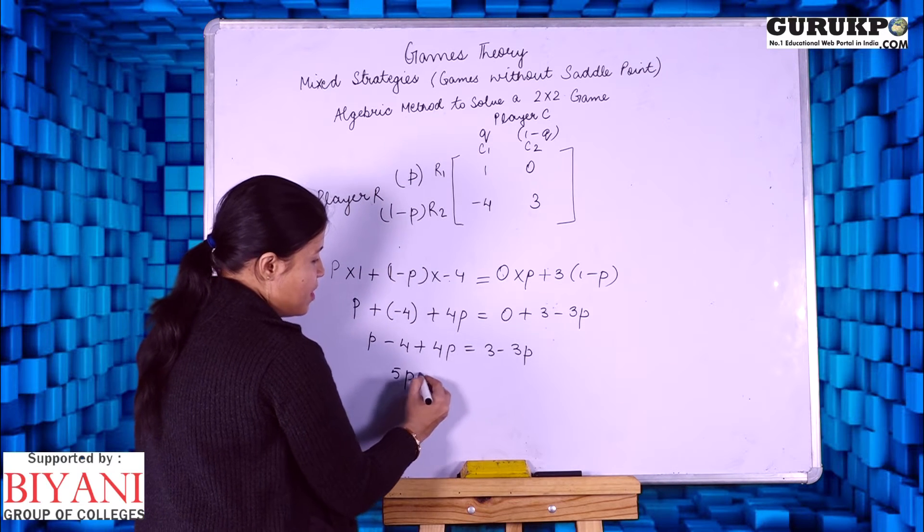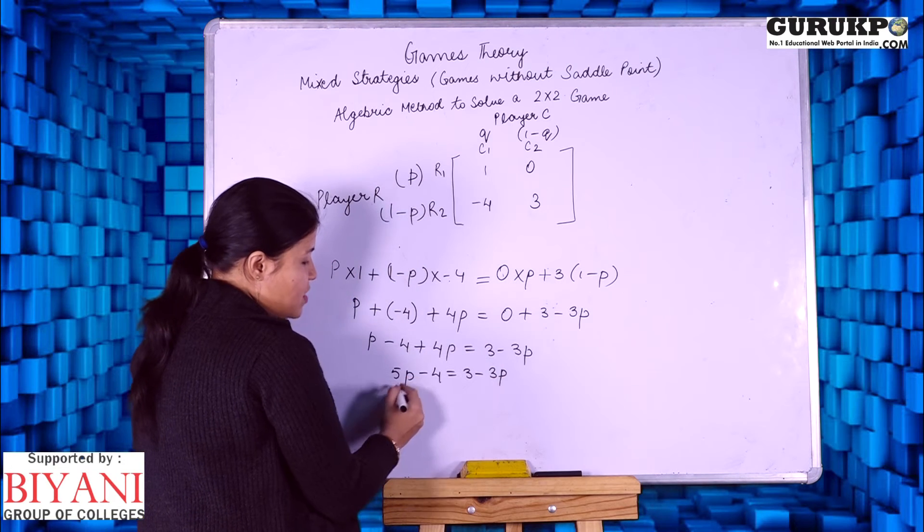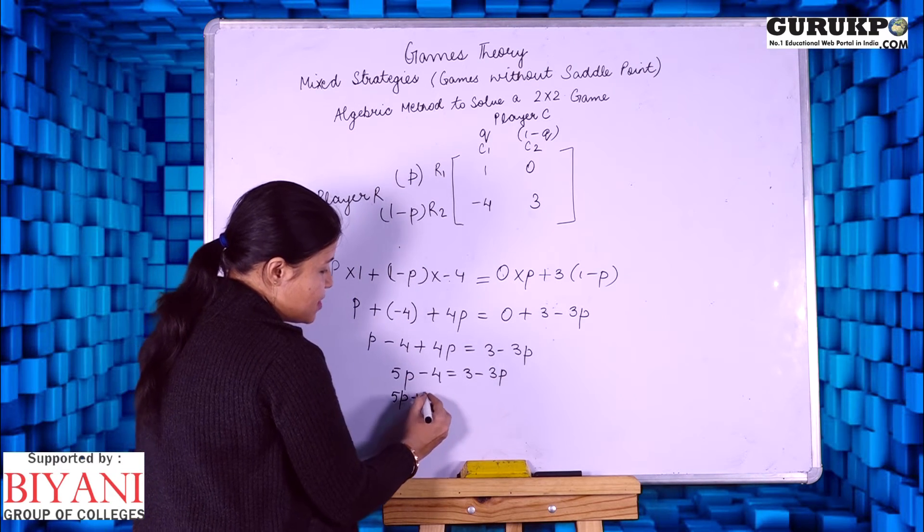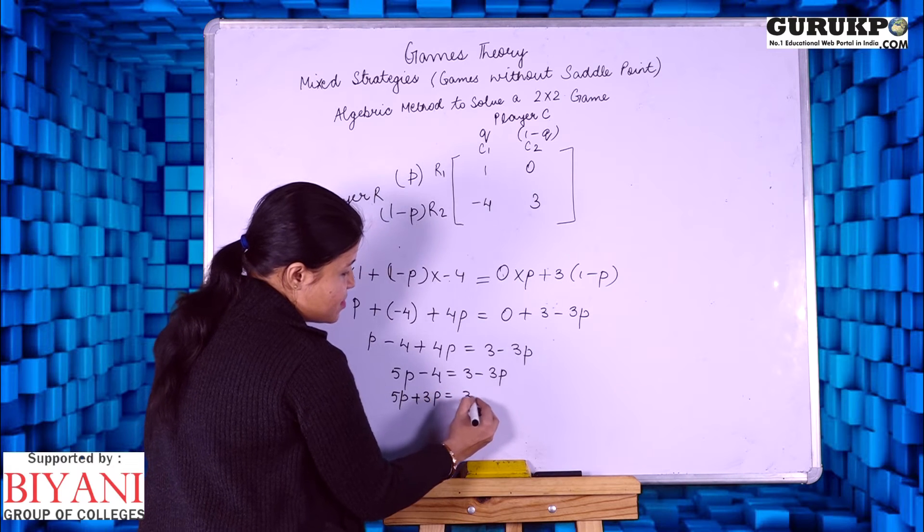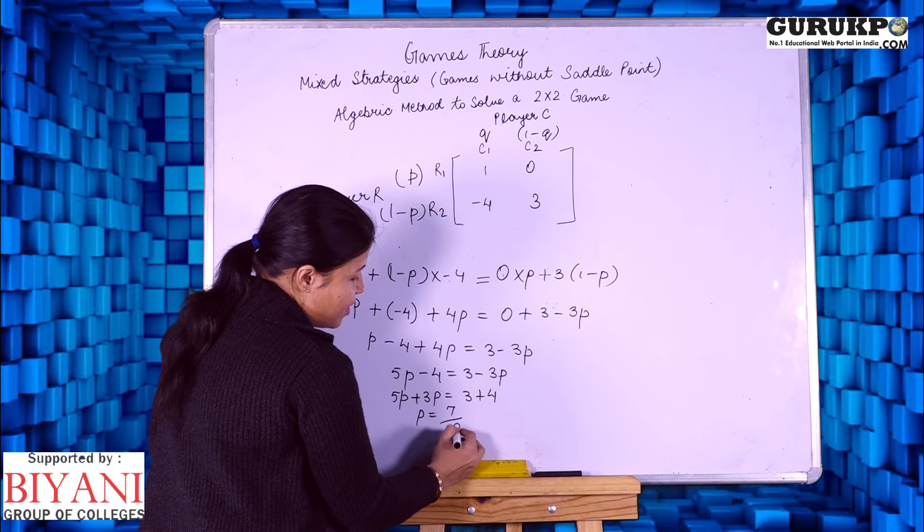This is 5P minus 4 equals 3 minus 3P. We will take the values one side plus 3P. 8P equals 3 plus 4, so 8P equals to 7.